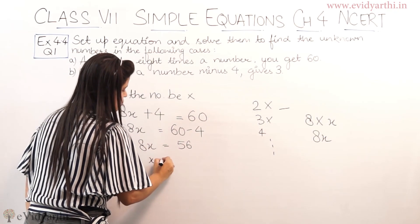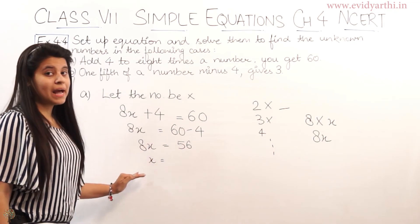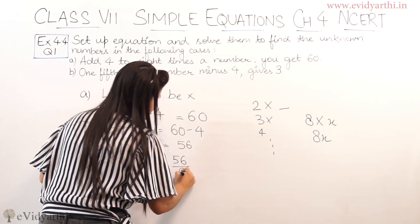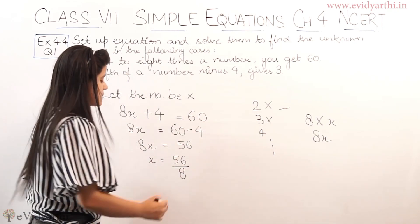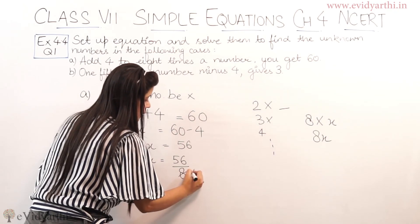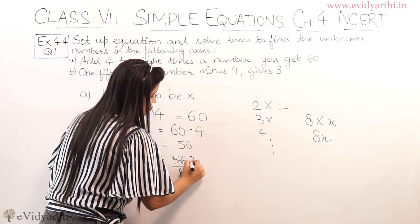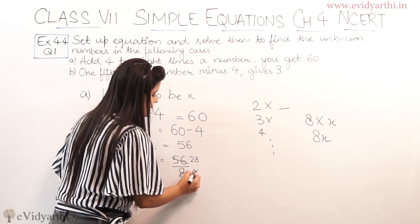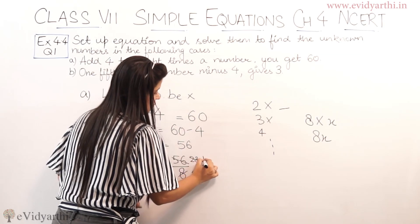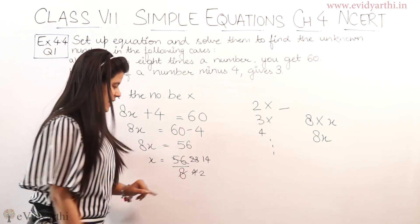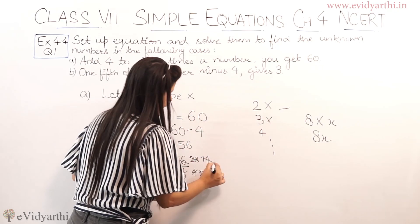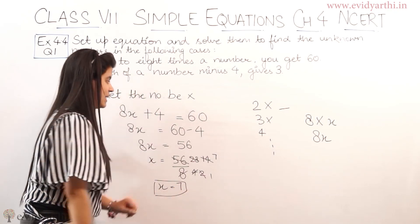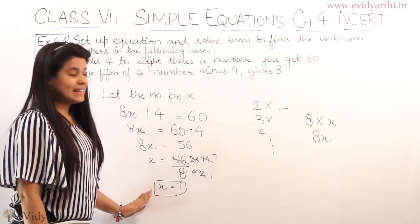So now x equals 56 divided by 8. We simplify: 56 upon 8. Cutting through common factors, we get x = 7. So we can set up the equation and the value of x is 7. This is our answer for part A. Now let's go to part B.